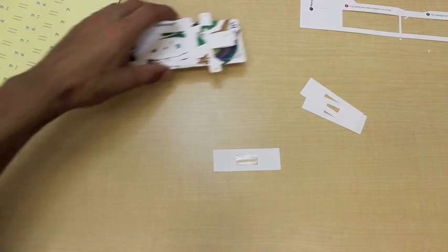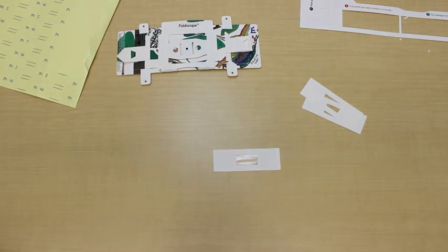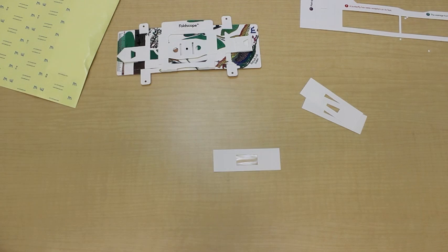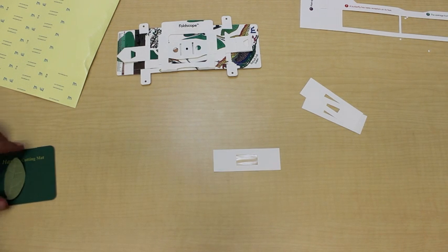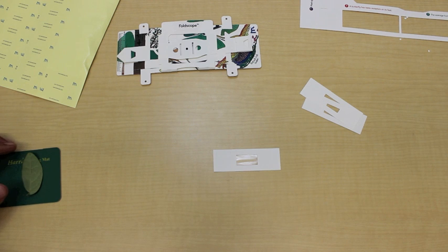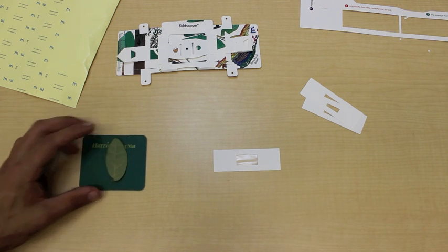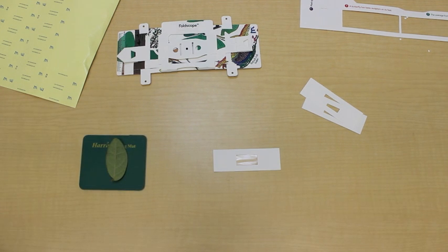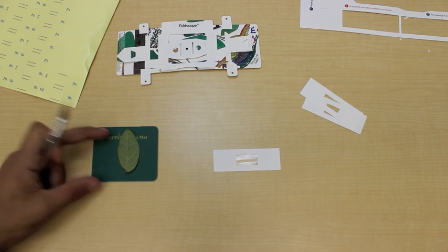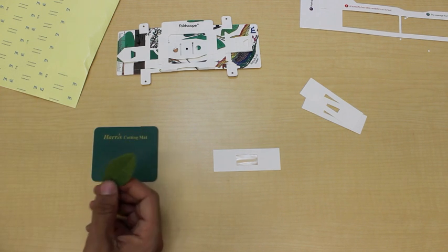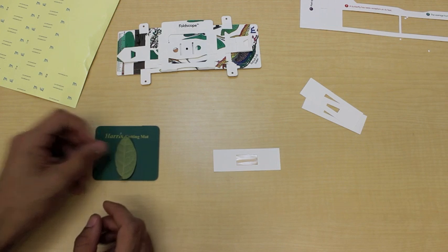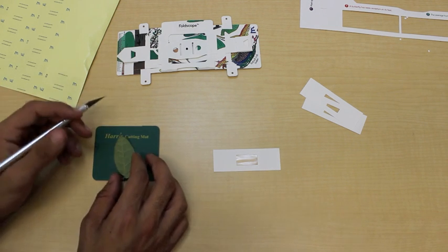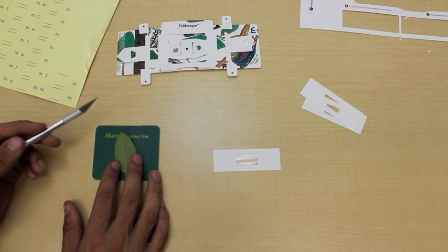Now we need to place a sample on this. In this step, we're going to be preparing a dry sample. Dry samples can be anything from blades of grass to strands of hair to insects or anything that isn't liquid. I've chosen to prepare a leaf. The leaf itself is too thick to see under the microscope, so we need to cut a thin strip or a thin piece so that light will be able to pass through it.